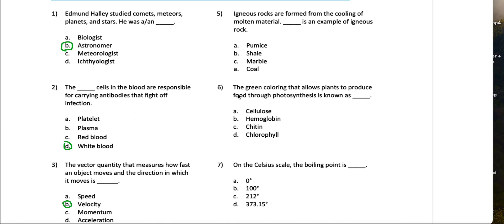Number five says igneous rocks are formed from the cooling of molten material. Blank is an example of those rocks. Let me see, shale, marble, coal... I'm not even sure if coal is a rock, but I think this would be pumice.